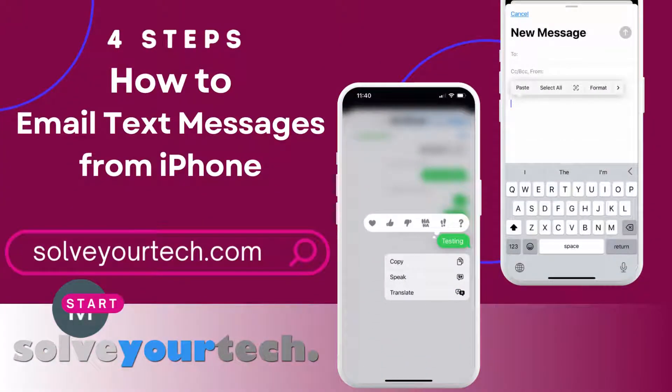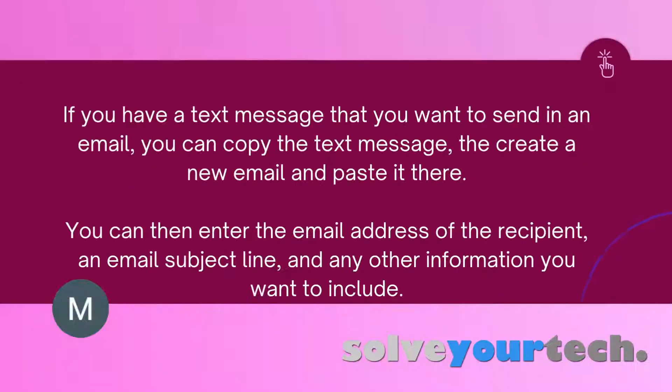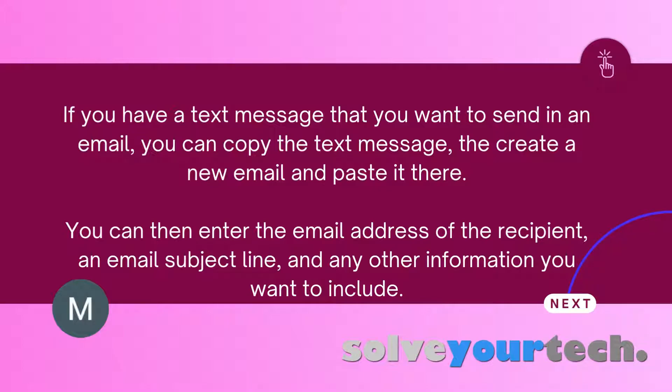This video from SolveYourTech.com is going to show you how to email text messages from your iPhone. If you have content in a text message that you want to send in an email, you can copy the content from the text message, create a new email, then paste it there. Once the pasted content is in the email, you can enter the email address of the recipient, a subject line for the message, and any other information you want to include.